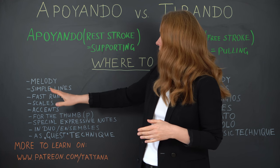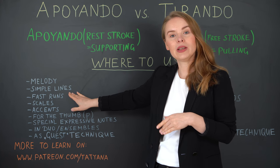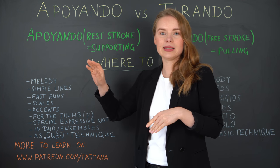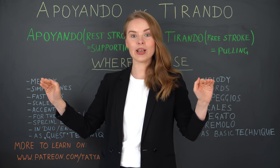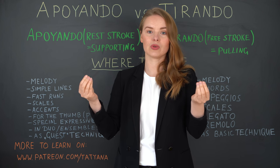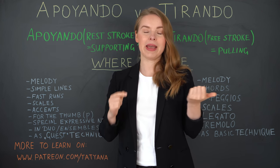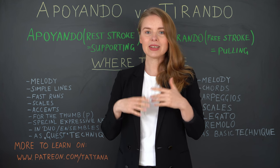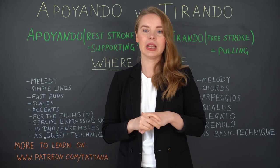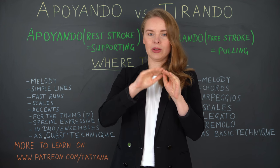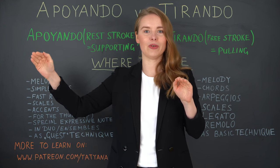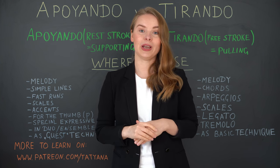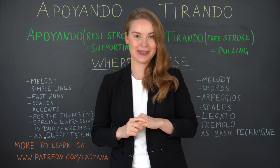To be more sure, use apoyando in simple lines — meaning you have only one voice, a short part of a melody without any basses or accompaniment notes. When you see only one line of notes in your score, you can be sure that using apoyando is very suitable there.